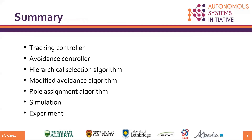In summary, we are using tracking and avoidance controllers from the literature to guide robots to a desired destination in a defined shape. Using a hierarchical selection to choose the active controller, a modified avoidance algorithm is proposed to determine when an obstacle is completely avoided. An algorithm for role assignment is proposed to fix the problem of leader failure. We are simulating this work using Gazebo and TurtleBot3, which will later be implemented on an Epoch 2 robot for experiment.